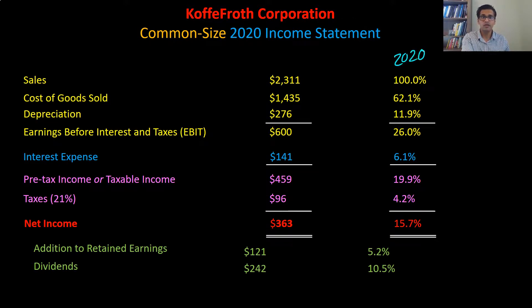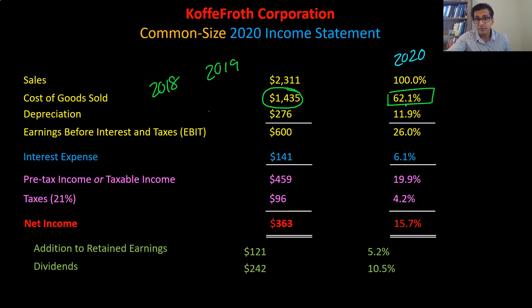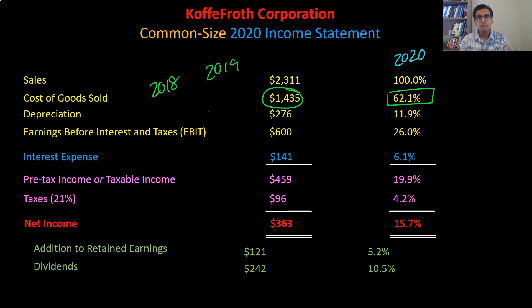So this is what things look like in 2020. Why is this useful? Because now if you had figures for 2018 and 2019, you could do a more meaningful comparison — rather than comparing dollar figures for cost of goods sold, you compare the percentages. Or if your cost of goods sold is 62.1%, you can more meaningfully compare with other firms in the same industry, which is an example of peer group analysis. It never makes sense to just look at dollar figures.